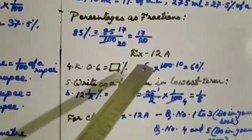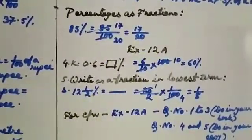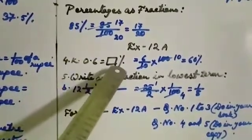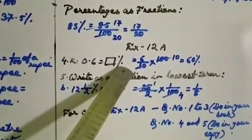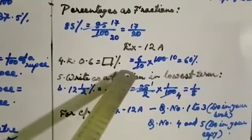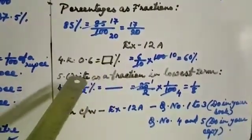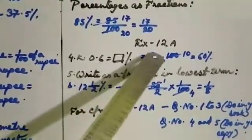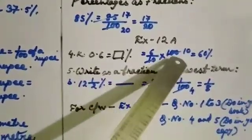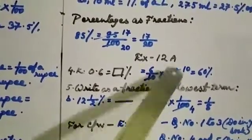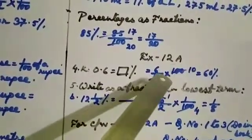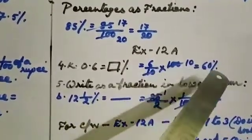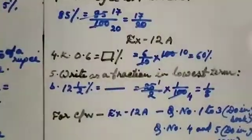Now your exercise 12a, case number 4k: 0.6 equals dash percent — this is fill in the blanks. How do we solve this? 0.6 means 6 by 10, multiplied by 100. Do cross multiplication — 10 into 10 gives 100, and 6 into 10 gives 60. So the answer is 60 percent.